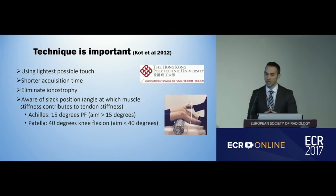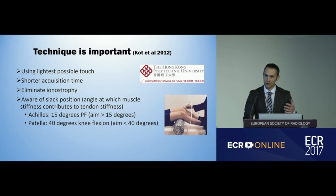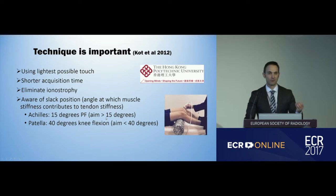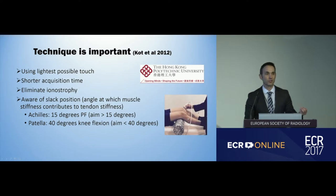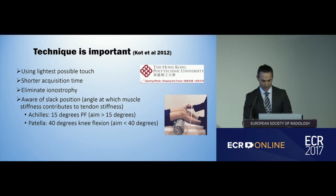With any imaging modality, technique is important. They found that you need to use the lightest possible touch, shorter acquisition time, and eliminate anisotropy — an artifact particularly related to musculoskeletal medicine. You also need to be aware of the slack position, which is the angle at which muscle stiffness contributes to tendon stiffness. The Achilles slack angle is 15 degrees, so you want to be greater than 15 degrees — and luckily that's in a neutral position. The patella needs to be less than 40 degrees. If you measure tendon stiffness at greater than 40 degrees, muscle stiffness will contribute and give you an incorrect result.